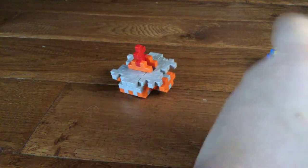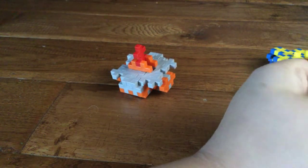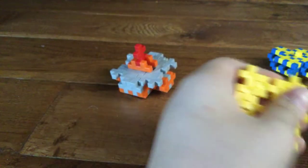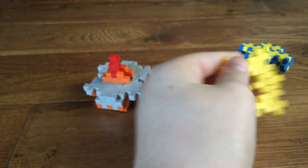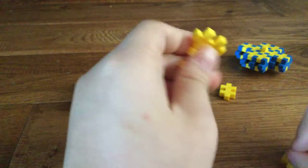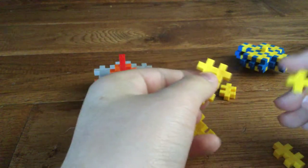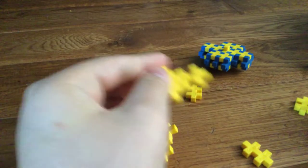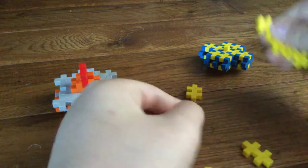First you need eight pieces of whatever color you want, actually ten pieces. So I'm going to show you how to do these three pieces of plus pluses. Attach them like this, and then you do the same with another.